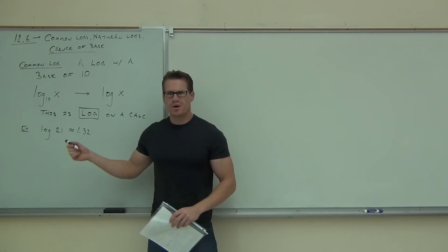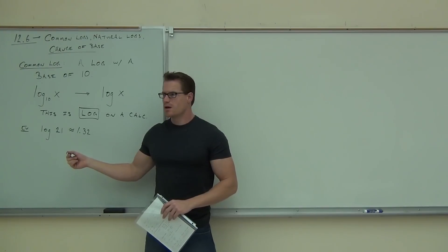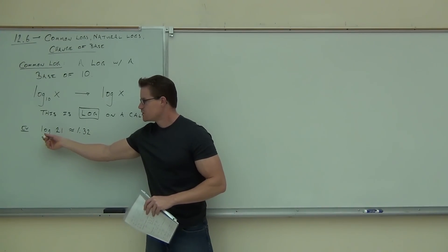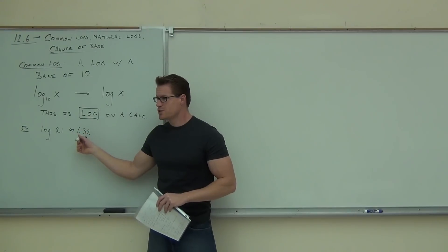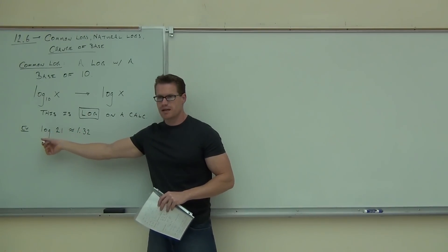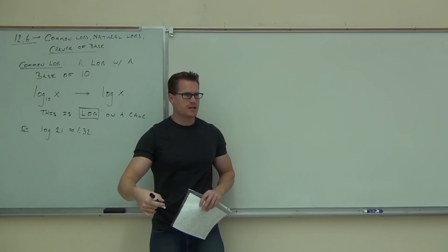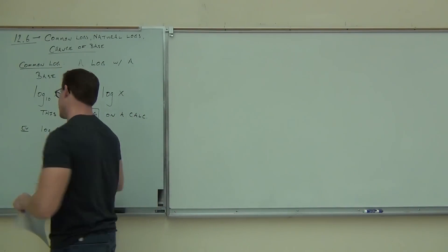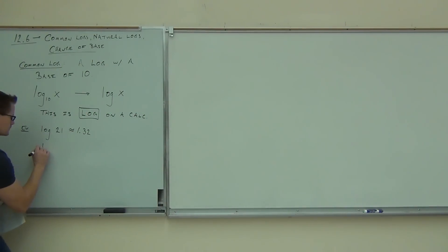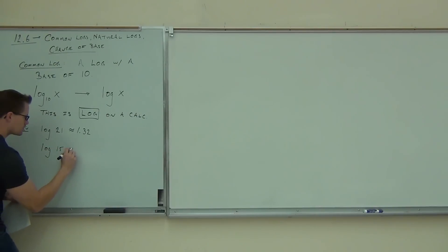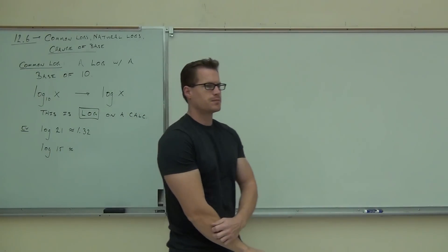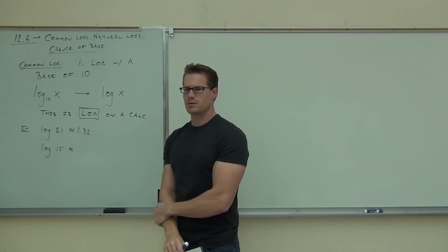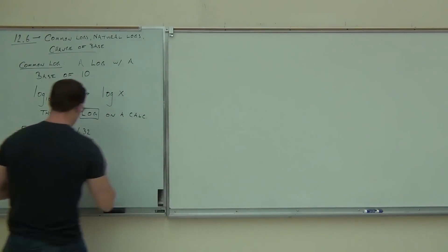So here's what that means. The base is 10, so this says: 10 to the 1.32 power is equal to 21. Are you okay with that log idea? Let's try one more — do log 15. That gives us about 1.18. So we can easily find logarithms base 10 on your calculator.